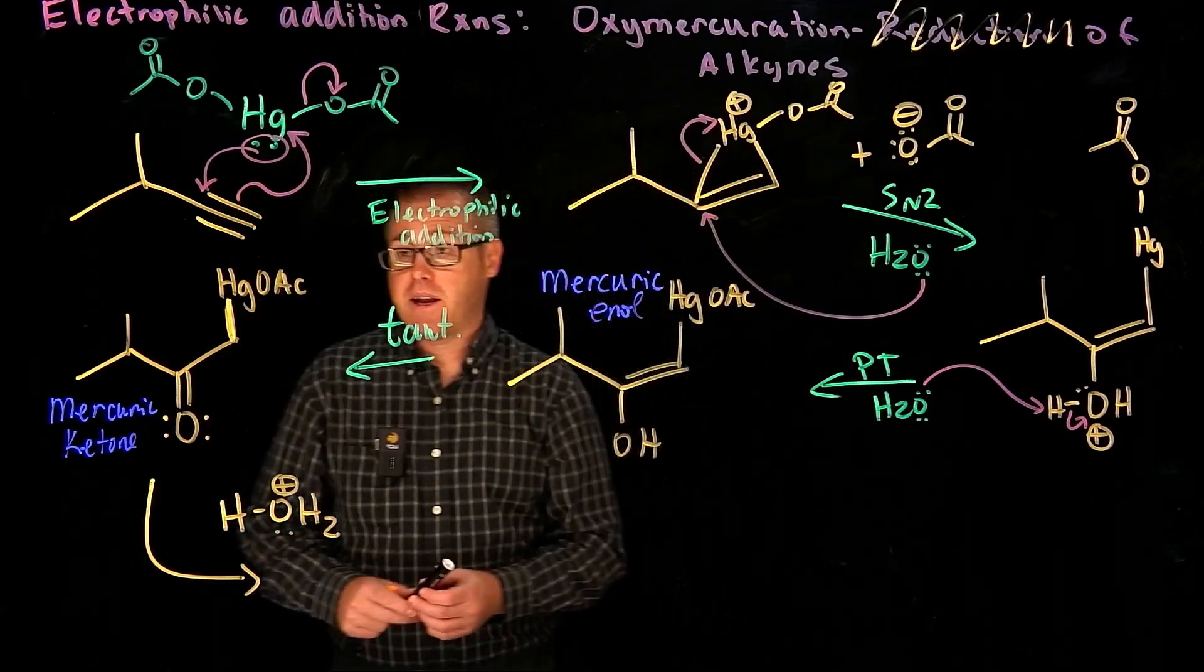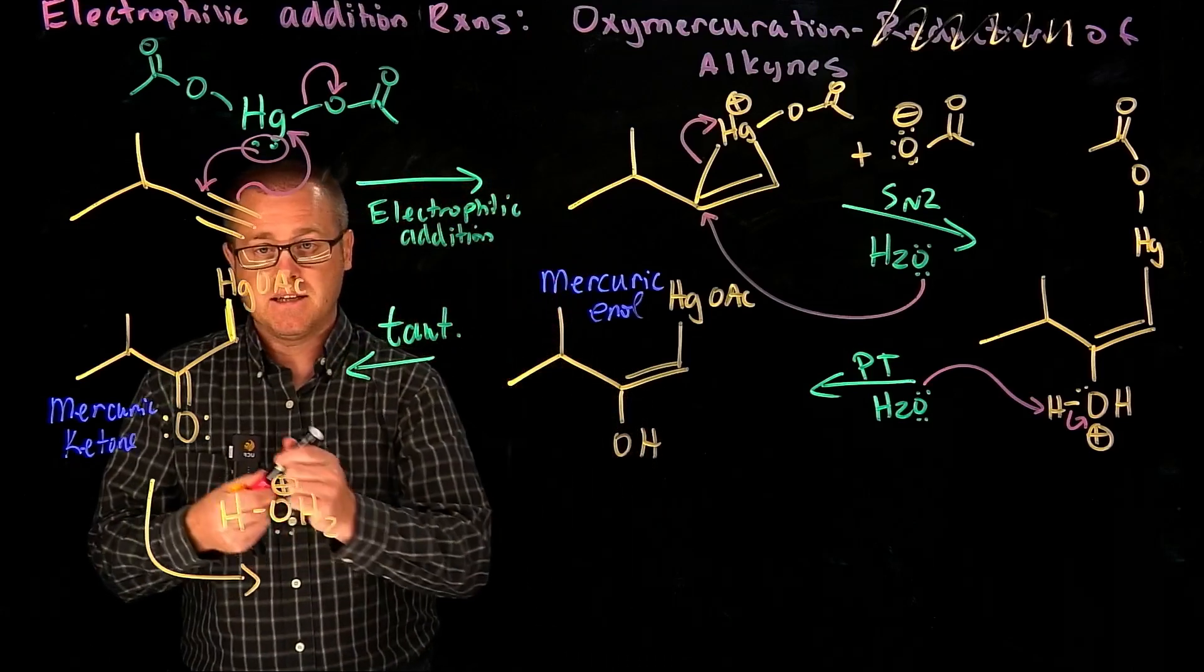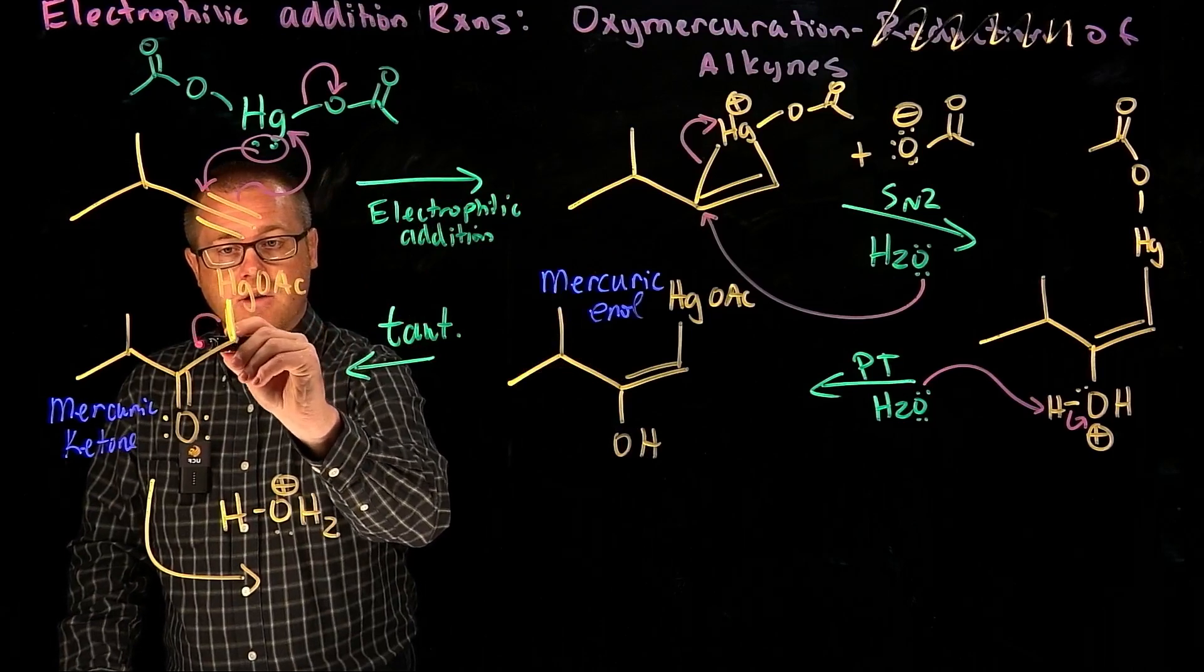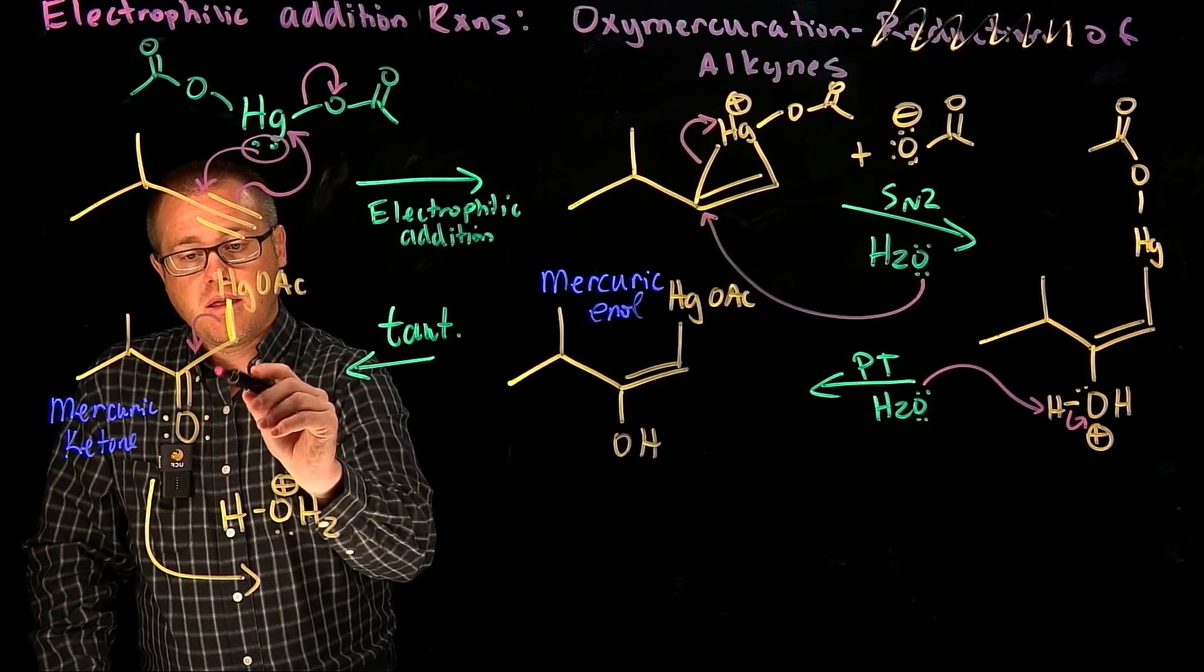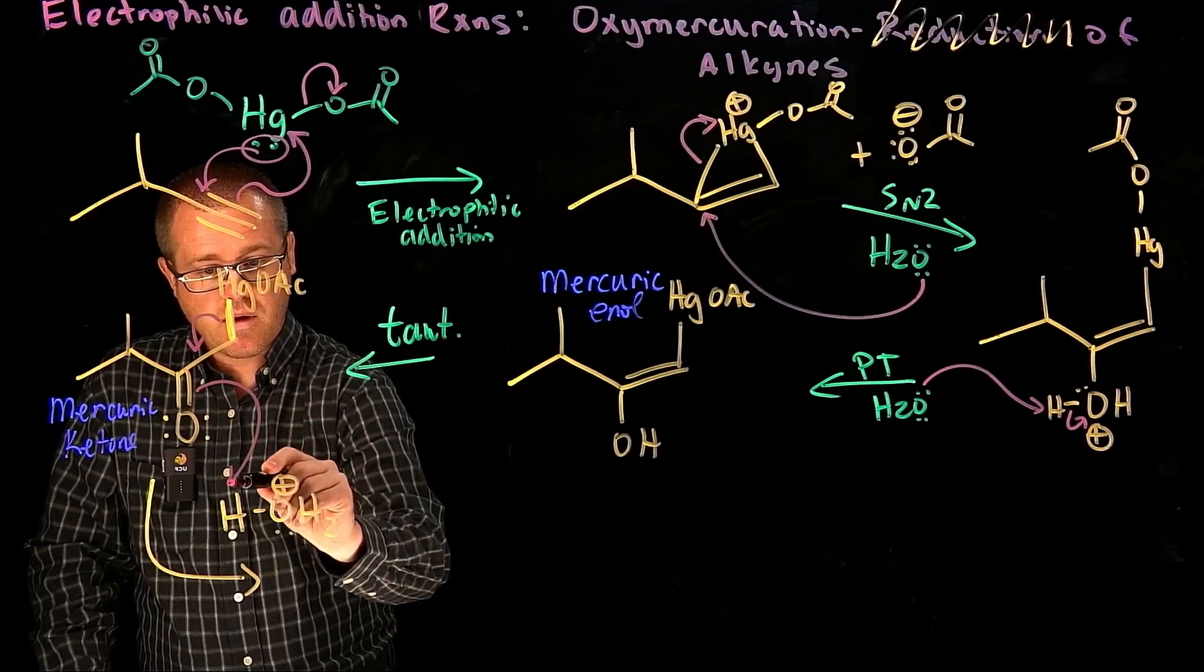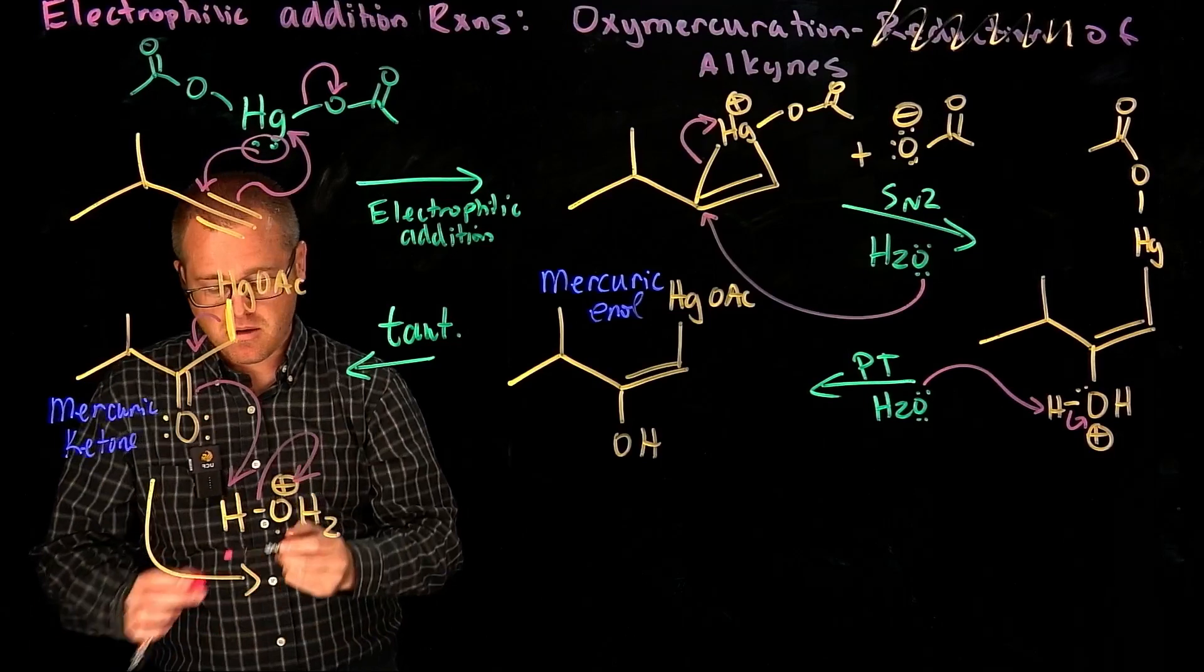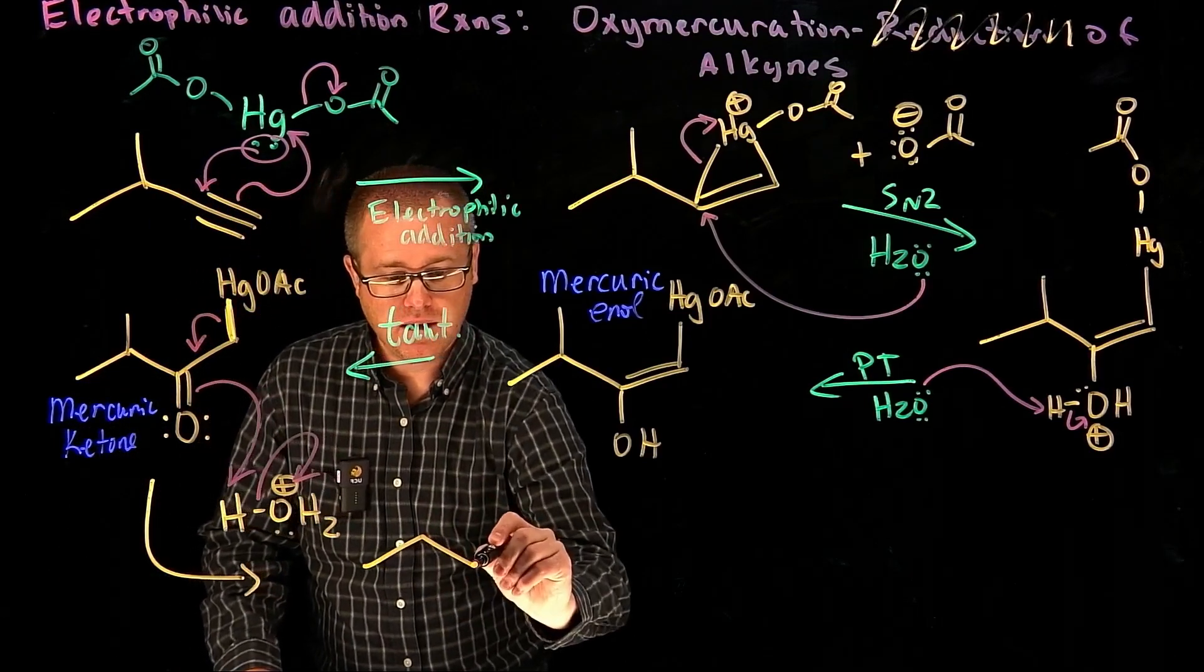So once the mercury ketone is formed under acidic conditions, it's going to hydrolyze in this manner. That mercury-carbon bond is going to dump its electrons between the two carbons. And then this bond right here, the carbon-oxygen, is going to come and grab that proton like so.